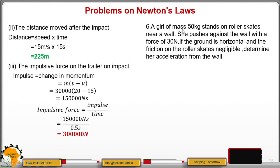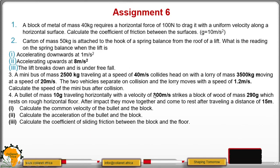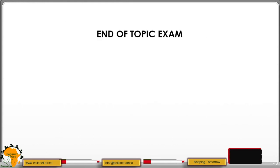Then question number 6: a girl of mass 50 kg starts on roller skates near a wall. She pushes against the wall with a force of 30 newtons. If the ground is horizontal and friction of the roller skates is negligible, determine her acceleration from the wall. We know that action equals reaction, so the reaction force accelerating the girl is 30 newtons. Therefore F equals MA, so acceleration equals 30 divided by 50, giving 0.6 meters per second squared. Then there is an assignment testing what we have just learned — make sure you practice a lot and prepare for the end of topic exam. Thank you and let us meet in another topic.